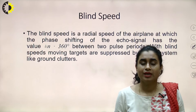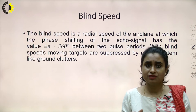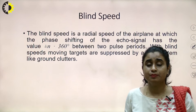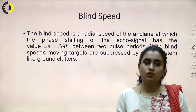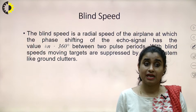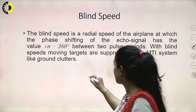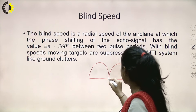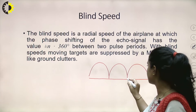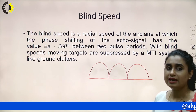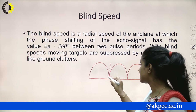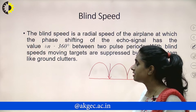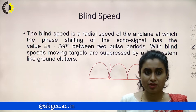So what is blind speed? We know it is the radial speed of the airplane at which phase shifting of the echo signal has a value of plus or minus 360 degrees between the two pulse periods. With blind speeds, moving targets are suppressed by an MTI system like ground clutters. When the frequency response is obtained, these are the points of zero energy. If a target appears at this point, it cannot be detected by the system. So to avoid it, we use different phenomena.